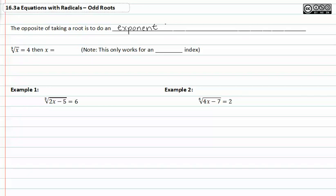If you have the cube root of x equals four, then if you take both sides of the equation and raise them to the third power, notice that we're raising it to the same power as the index, then x is equal to four cubed or sixty-four.